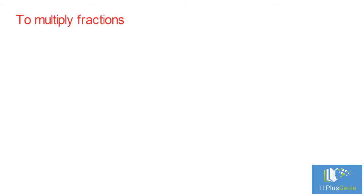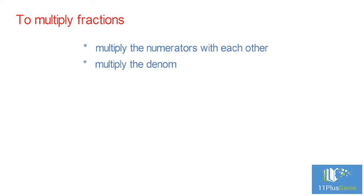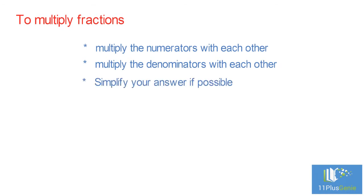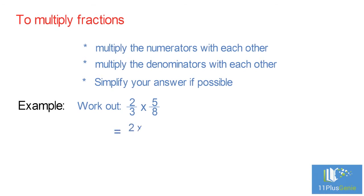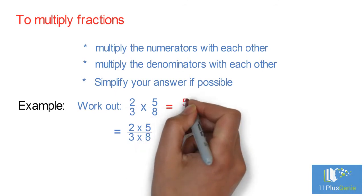To multiply fractions, multiply the numerators with each other and multiply the denominators with each other, then simplify your answer if possible. For example, two-thirds times five-eighths: multiply the numerators — 2 times 5 equals 10; multiply the denominators — 3 times 8 equals 24. Simplify by dividing by 2: two-thirds times five-eighths equals five-twelfths.